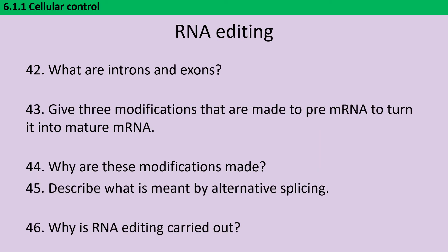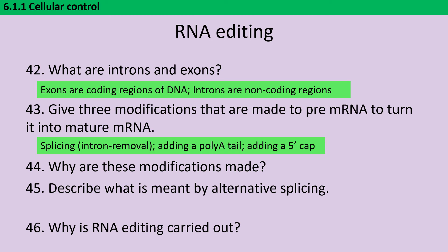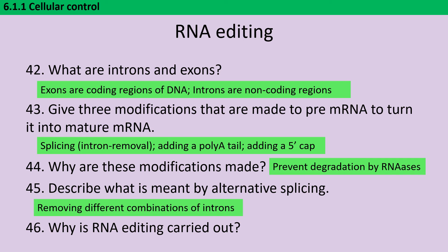Within a gene, the introns are the non-coding regions which sit between the exons, which are the coding regions that actually give us the sequence for the polypeptide. In order to turn pre-mRNA into mature mRNA, firstly those introns need to be spliced out, and secondly we need to add a poly-A tail and a 5-prime cap. The reason for doing this is that having the poly-A tail and 5-prime cap prevents the RNA from being degraded by enzymes called RNases, which are there to stop viral RNA from hanging around in the cell undetected. Alternative splicing is when we take one original mRNA molecule and, depending on the protein we want to make, remove different combinations of introns — so one gene can give rise to several different proteins.